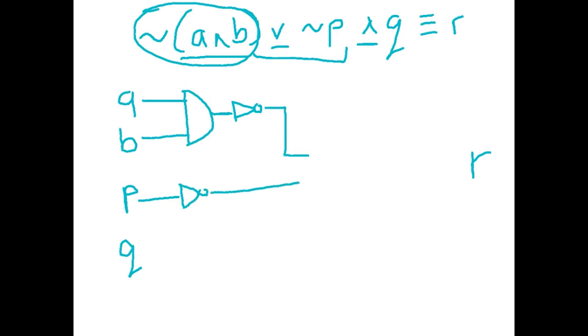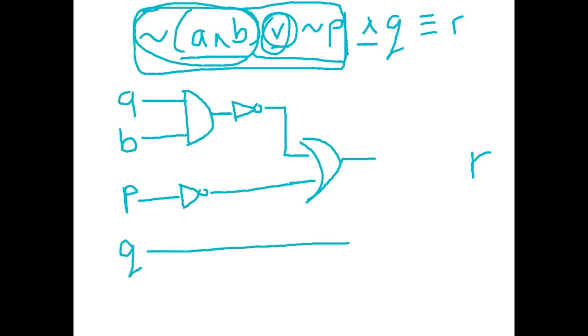A little pointy kind of one. Not very good at drawing these. And then we keep going through our expression and we AND all of this with Q. So let's take our Q, hand it up there. We are going to AND them to produce R. Okay, hopefully you are able to follow that.